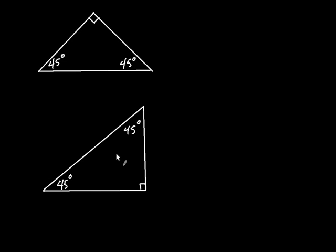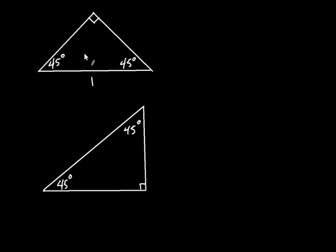This is going to be our second important triangle. Let's assume this length is one. This is an isosceles right triangle — it's a right triangle where this angle is 90 degrees and each of the other angles is 45 degrees. Because it's isosceles, these two sides must be the same length, so I'm going to label both of them x.